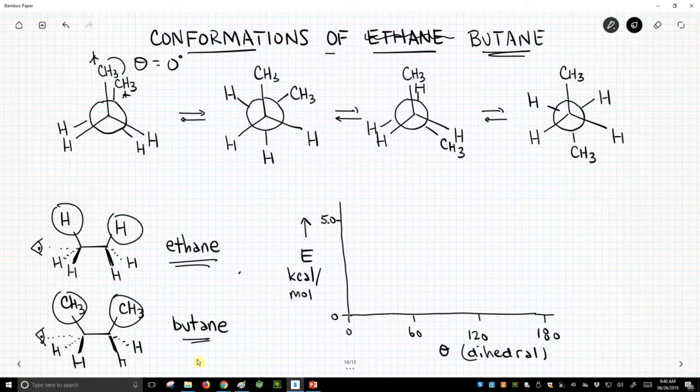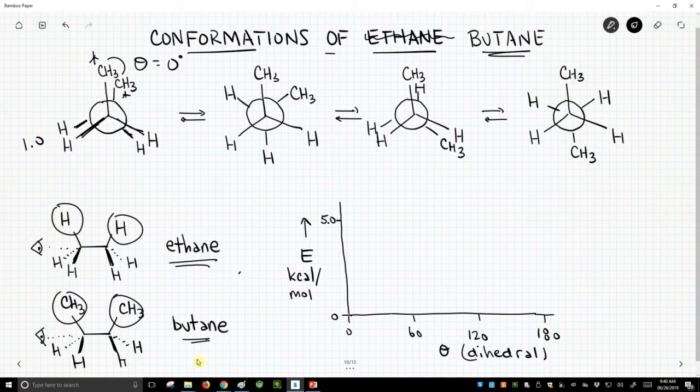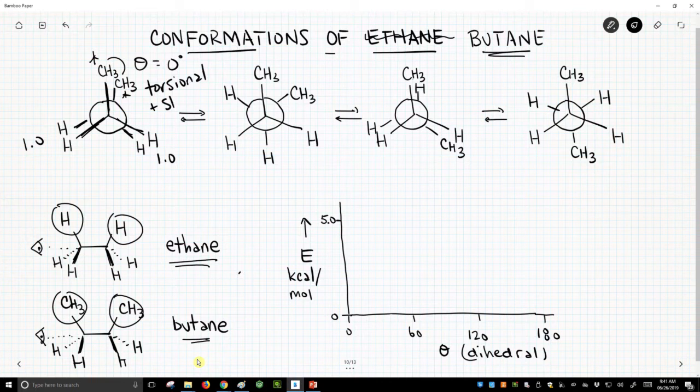This is an eclipsed conformation, and we can predict the energy of this. We know we have some eclipsing interactions. These are torsional strain between these two hydrogens. These two hydrogens are 1.0. As it turns out, our two methyl groups, when we eclipse these, they generate a lot of strain. It's not just torsional, it's also steric. Torsional plus sterics.